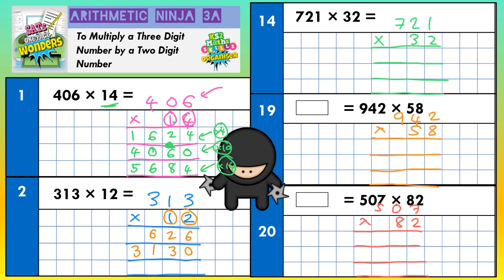Final line — we need to add everything together, because that will give us 12 lots of 313. So 6 plus nothing is 6, 2 plus 3 is 5, 6 plus 1 is 7, and nothing and 3 is 3. Final answer: 3,756.